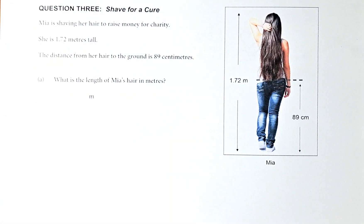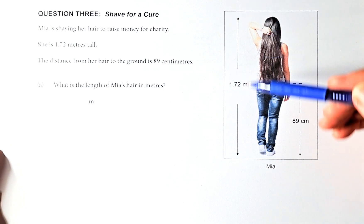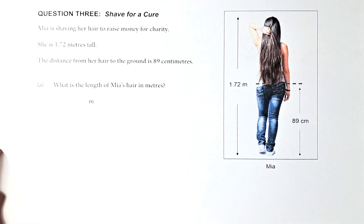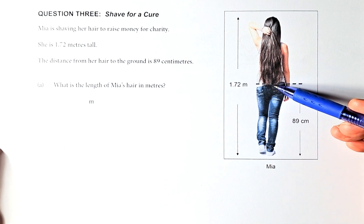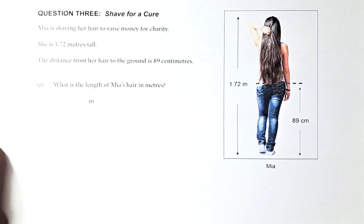So question 3A sounds like this. Maya is shaving her hair to raise money for charity. She is 1.72m tall. From top to bottom is 1.72m and the distance from her hair to the ground is 89cm. So from the hair here, the tip of the hair to the ground is 89cm.